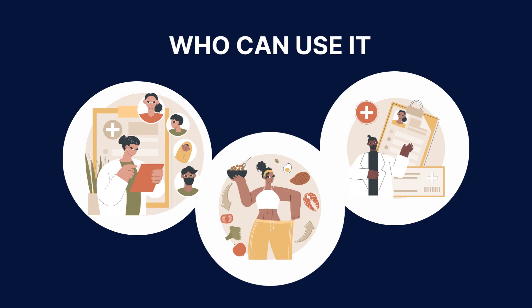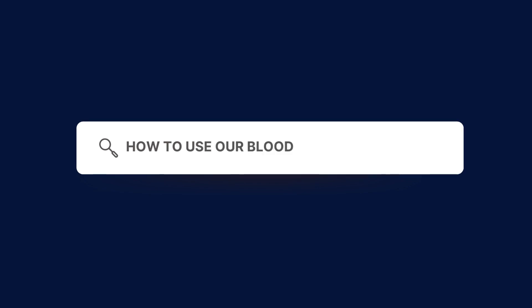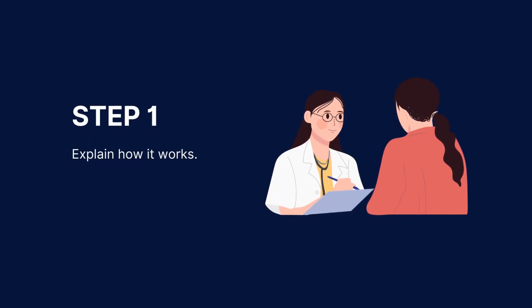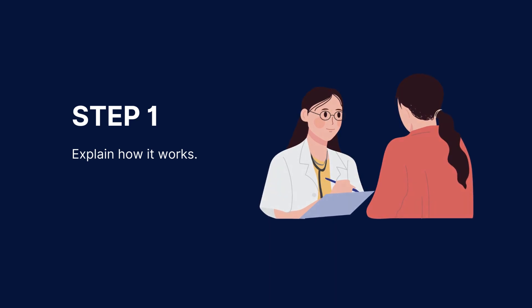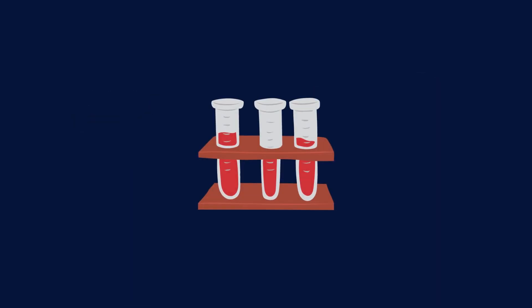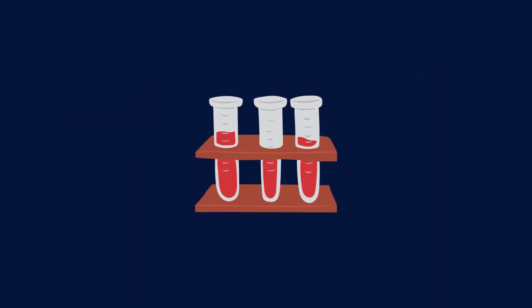To use our normal blood sugar levels chart, follow these steps. Download our normal blood sugar levels chart from the CarePatron platform, which you can find in the link in the description. Firstly, explain how the normal blood sugar levels chart works by discussing target blood sugar levels and the timing of meals.